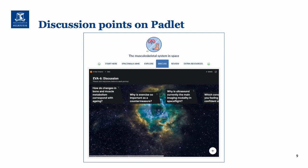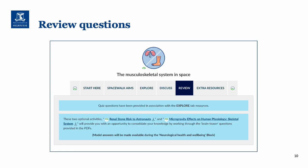There are three discussion points specific to this block and then three general points — I strongly encourage you to think about those and post some comments to share with your fellow students. With the review activities, quiz questions have been incorporated into the explore tab resources, and there are also two optional activities designed by NASA: one on renal stone risk to astronauts and the second on microgravity effects on human physiology with particular reference to the skeletal system. You can download the PDFs and work through those, and the answers will be made available during the neurological health and well-being block.